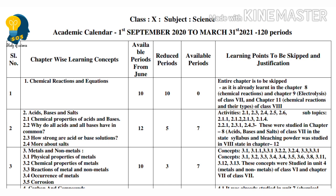Then 2.13 — How Do Metal Carbonates and Metal Hydrogen Carbonates React with Acids? — this topic is the main topic; we will skip this topic. Next, 2.14 — How Do Acids and Bases React with Each Other? These concepts under 2.1 — the sub-topics are removed.